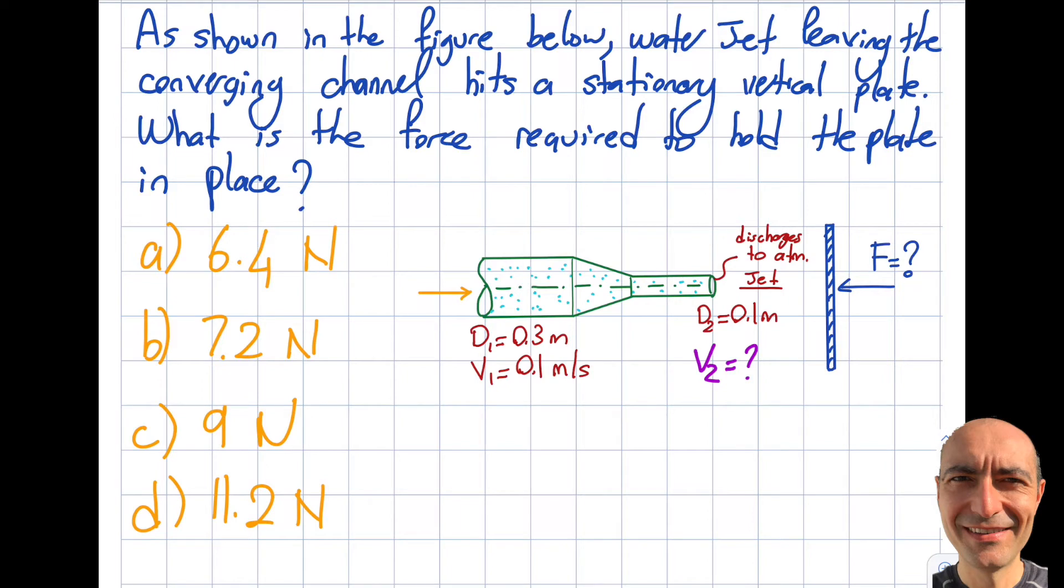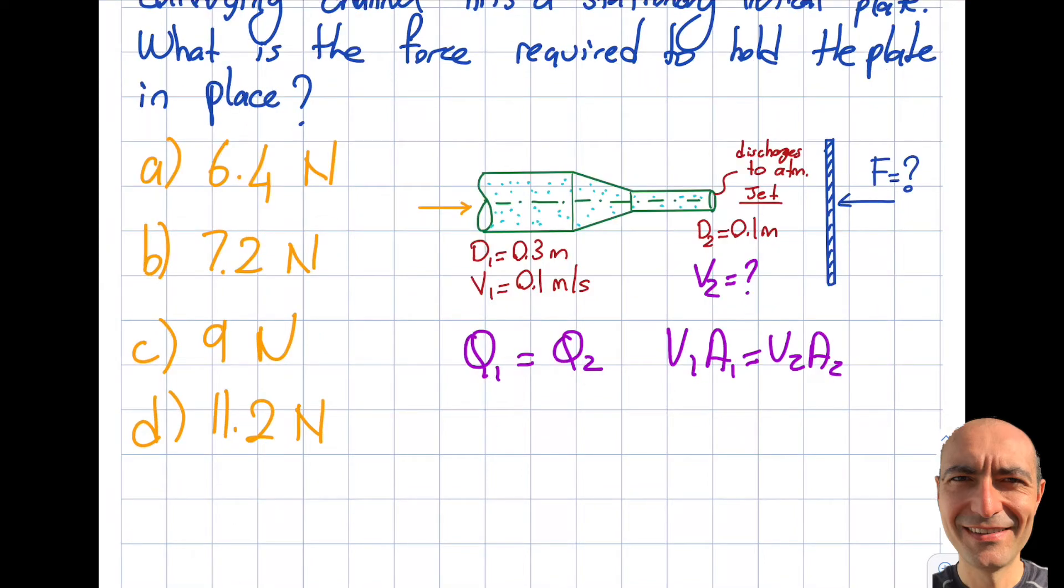Look at my reference manual. I get Q1 equals Q2, and from here V1·A1 equals V2·A2. All that is left is to insert the numbers. 0.1 times the area π/4·(0.3)² equals V2 which is the unknown, and A2 will be π/4·(0.1)².